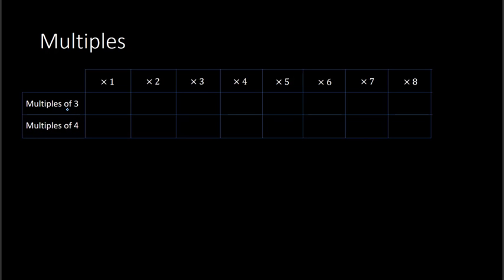What that means is we take the number 3 and we multiply it by different integers. So we start with number 1: 3 times 1 gives me 3, then multiply by 2 to get 6, then by 3 to get 9, then 12, 15, 18, 21, 24, etc. So multiples of 3 would be all these numbers here in the box: 3, 6, 9, 12, etc.